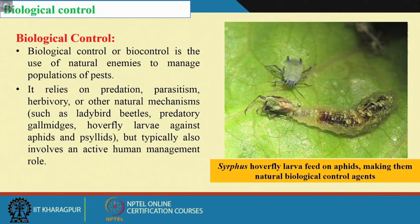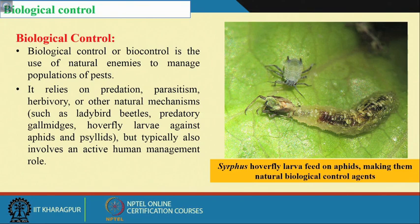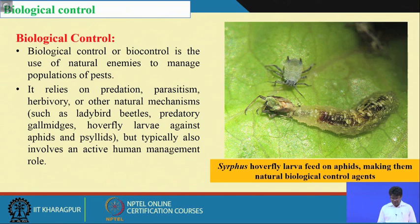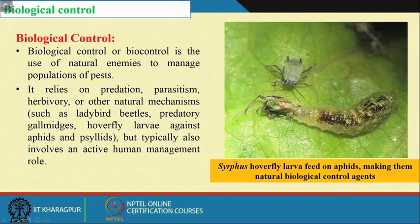This lecture we will discuss Level C — the use of biological control measures, bio-pesticides, and botanical pesticides for controlling pests and diseases in organic farming. Biological control, or biocontrol, is the use of natural enemies to manage a population of pests and diseases. It relies on predation, parasitism, herbivory, or other natural mechanisms. Natural creatures such as ladybird beetles, predatory bugs, or hoverfly larvae are used against many aphids or psyllids. As seen in the photo, hoverfly larvae feed on aphids, making them natural biological control agents.